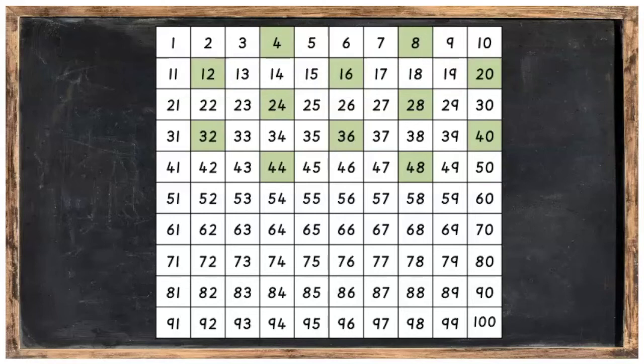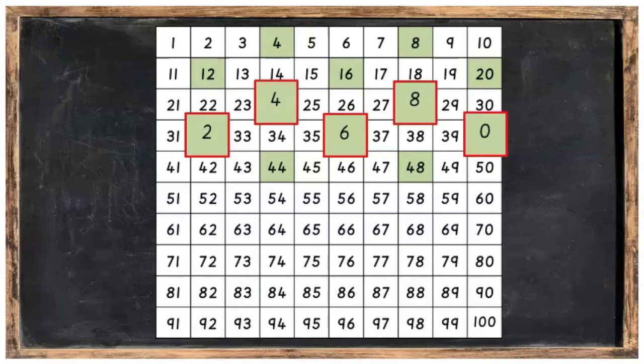You will also see that the number twenty-four, twenty-eight, thirty-two, thirty-six and forty also have a four, eight, two, six and zero in them.